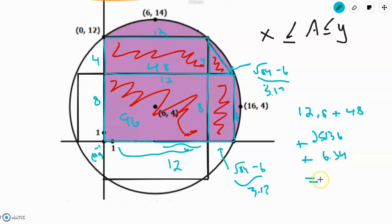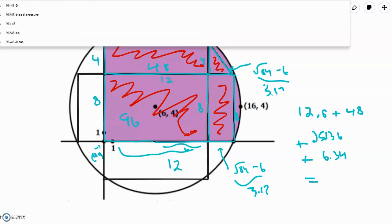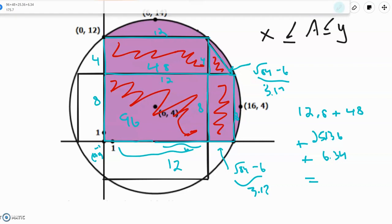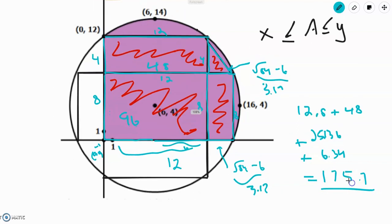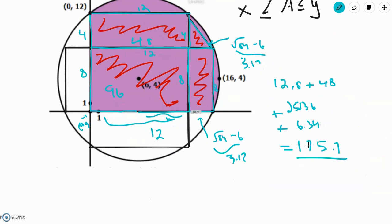But adding this all up, we'll get 96 plus 48 plus 25.36 plus 6.34. And so, that's 175.7. And thus, 175.7 is a lower bound for the area of the region. So we'll say x is equal to 175.7.